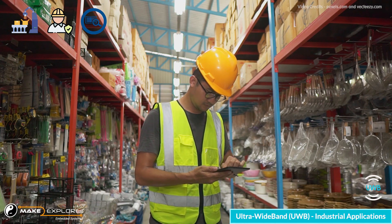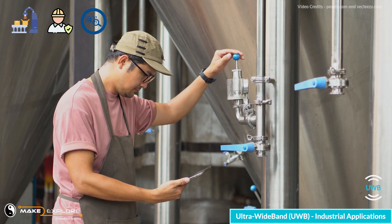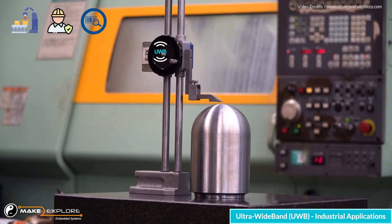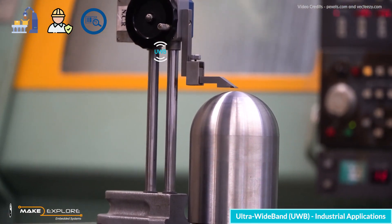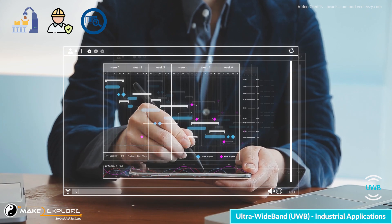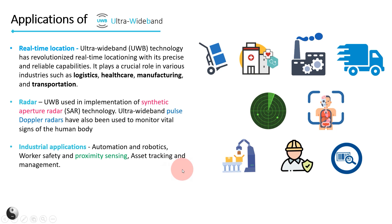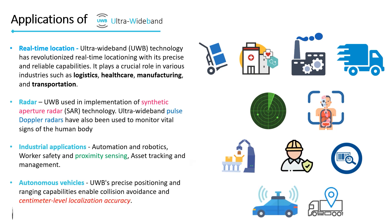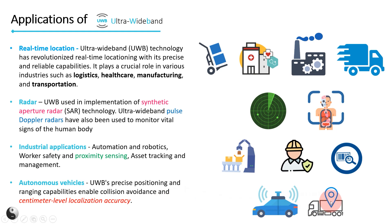Efficient asset tracking and management are crucial for industrial operations. UWB enables precise and real-time tracking of assets within industrial facilities. By attaching UWB tags to equipment, tools, and inventory, companies can monitor their location, movement, and utilization. This enhances inventory management, reduces asset loss, minimizes downtime, and streamlines maintenance processes. UWB-based asset tracking systems provide accurate and reliable data, empowering businesses to optimize resource allocation and improve overall operational efficiency. In autonomous vehicles, UWB's precise positioning and ranging capabilities enable collision avoidance and centimeter-level localization accuracy surpassing traditional GPS, while its high data rate and low latency facilitate seamless vehicle-to-vehicle communication.